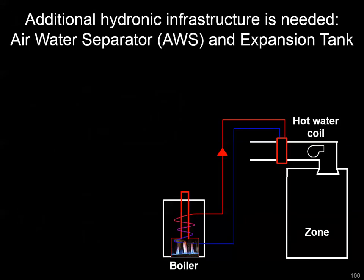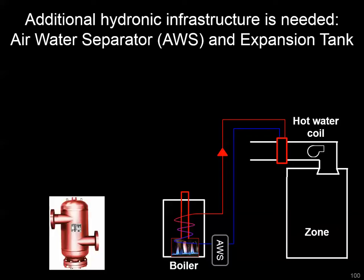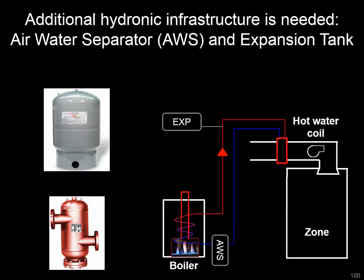There's some specific infrastructure needed in a hot water system. We have an air-water separator near the boiler that extracts entrained air from the hot water system — it's also the makeup point for water. Then there's an expansion tank, a device with an air bladder inside, meant to take up the extra volume when water heats up. Water is incompressible but changes density at different temperatures, so as it heats from startup up to around 180 or 200 degrees, it expands, and the expansion tank accommodates that additional volume.